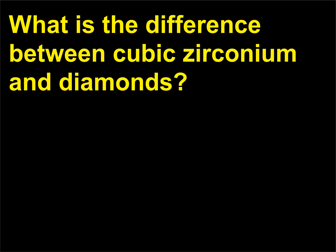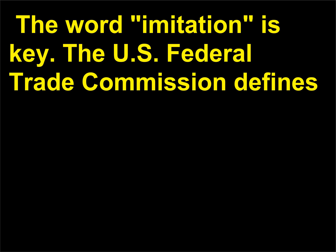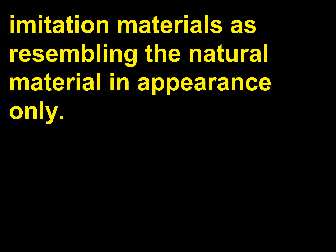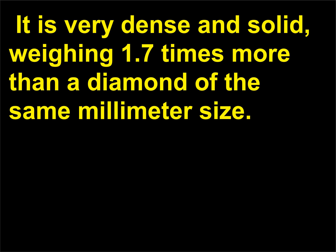What is the difference between cubic zirconium and diamonds? Cubic zirconium is a gemstone material that is an imitation of diamonds. The word imitation is key: the U.S. Federal Trade Commission defines imitation materials as resembling the natural material in appearance only. Cubic zirconium may be cut the same way as diamonds. It is very dense and solid, weighing 1.7 times more than a diamond of the same millimeter size.